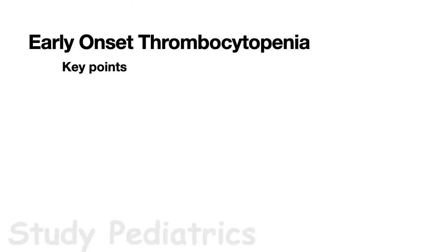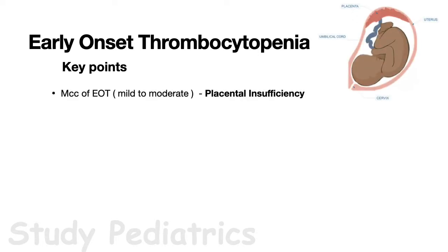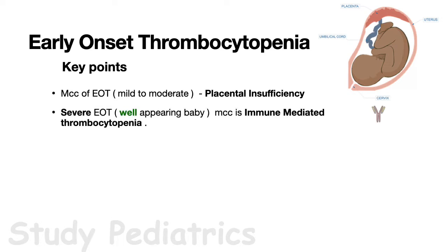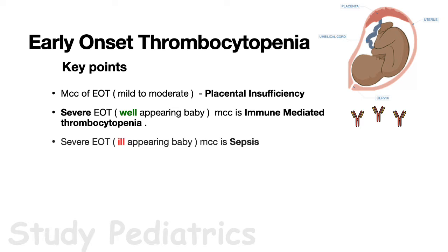The most common cause of early onset thrombocytopenia (EOT) in a well-appearing baby is placental insufficiency — failure of the placenta to provide enough nutrients and oxygen to tissues. This is seen in mothers with PIH, preeclampsia, diabetes, or those with IUGR. In cases of severe EOT with platelet count less than 50,000 in a well-appearing baby, the most common cause is immune-mediated thrombocytopenia. If the baby is ill-appearing, the most common cause is sepsis.